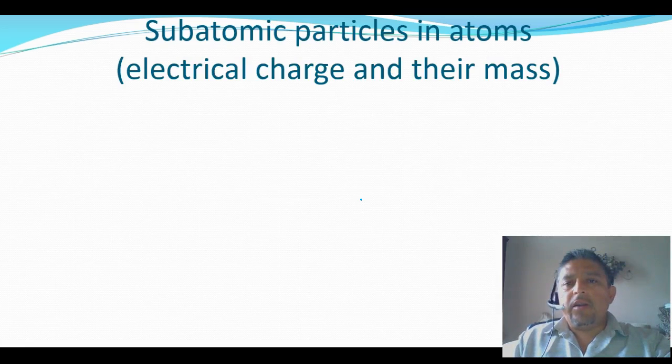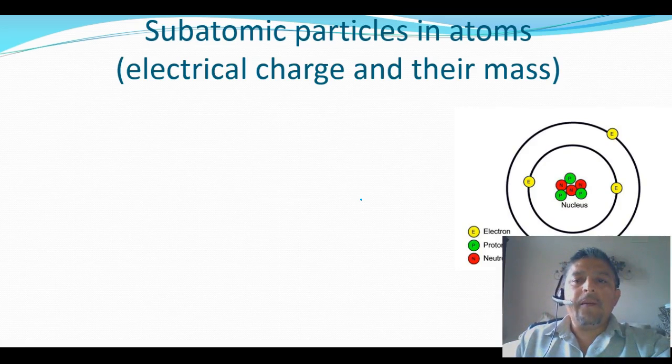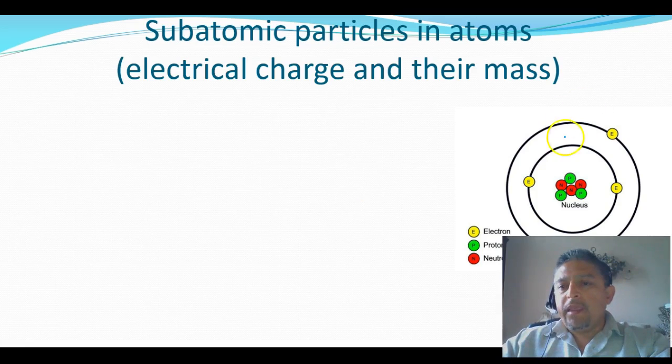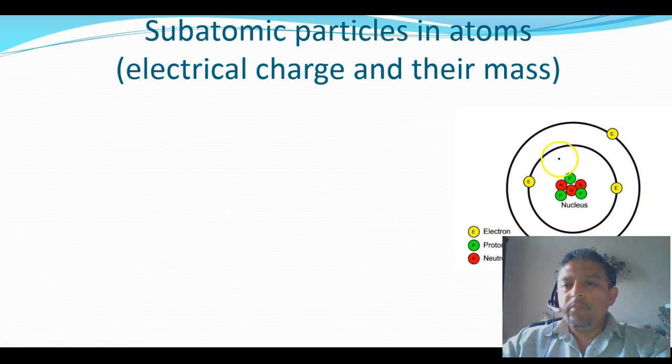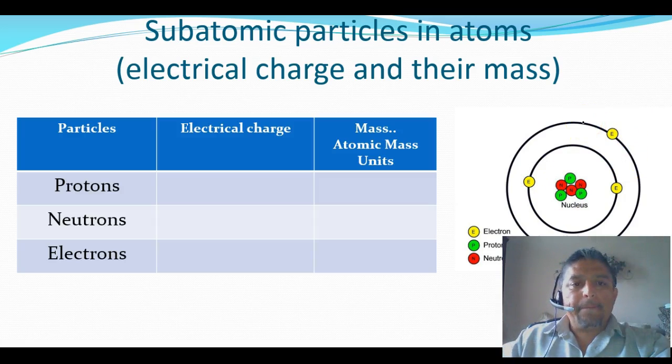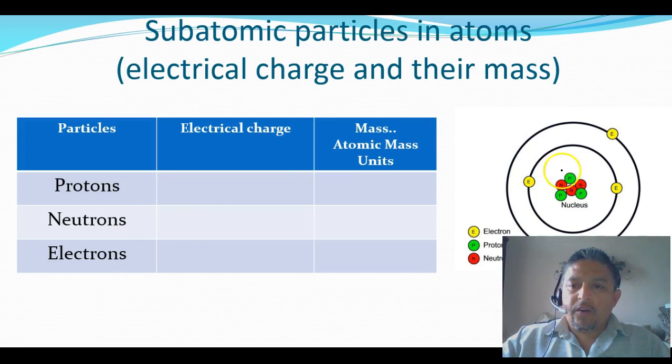The subatomic particles in the atoms have also electrical charges and they have their respective mass. Like for example, if we see this very basic atomic structure once again, we see inside the nucleus the protons and the neutrons, and we see the electrons around the nucleus. So in this chart, or this data table,